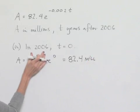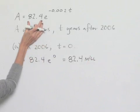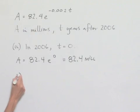And so, we can see that in our formula, this value is going to be our initial amount, 82.4. Let's go ahead and move to Part B.